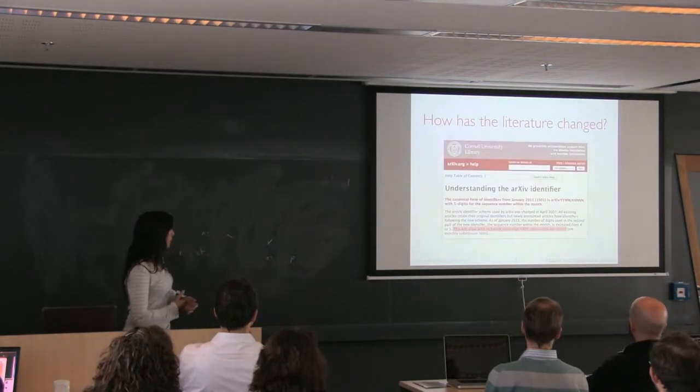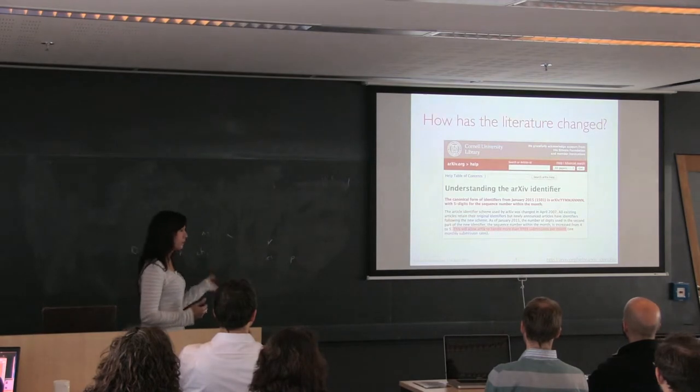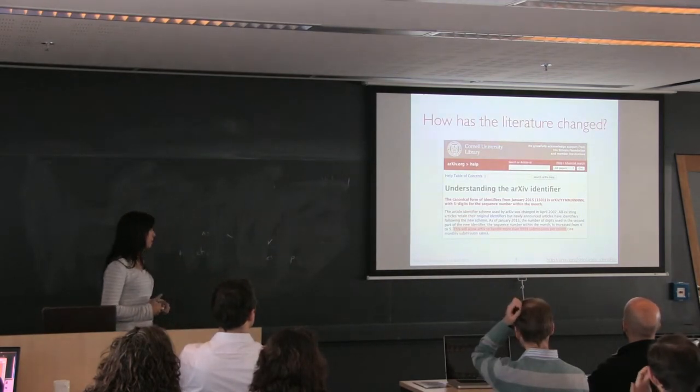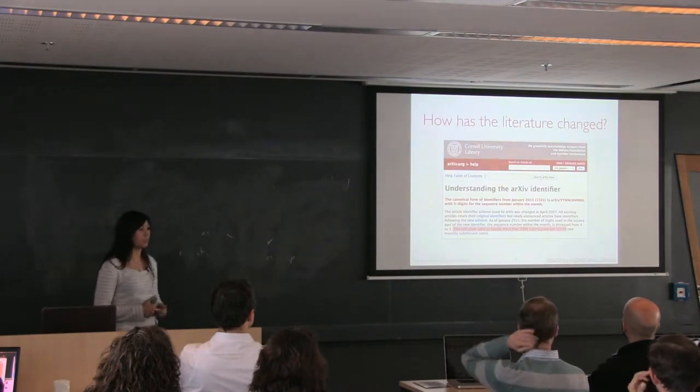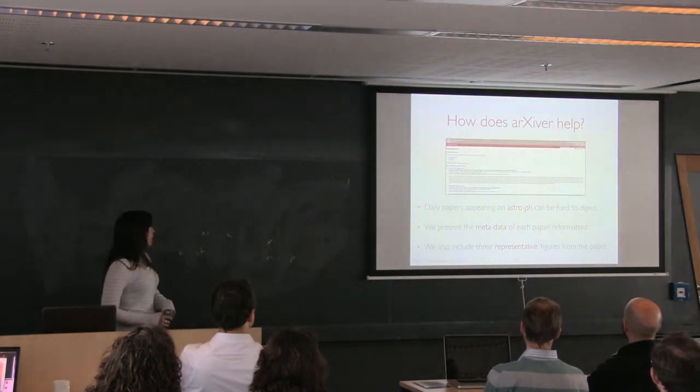Many people also know about this, but arXiv itself has changed its identifier. They used to use four numbers after the year and the month to signify what number that paper was, but now they're expecting over 10,000 papers each month, so they've added an extra number. Lots of papers.